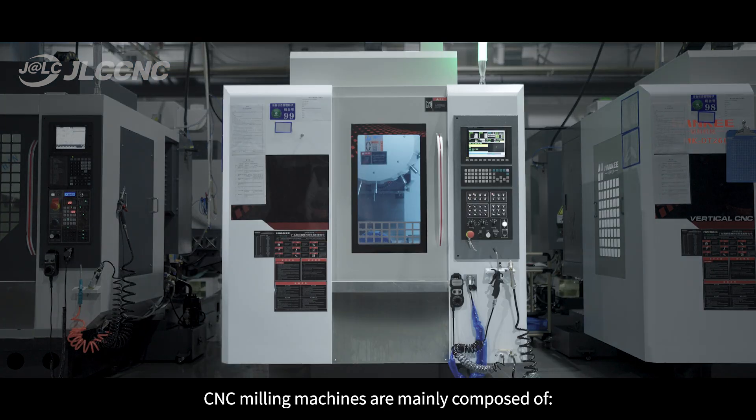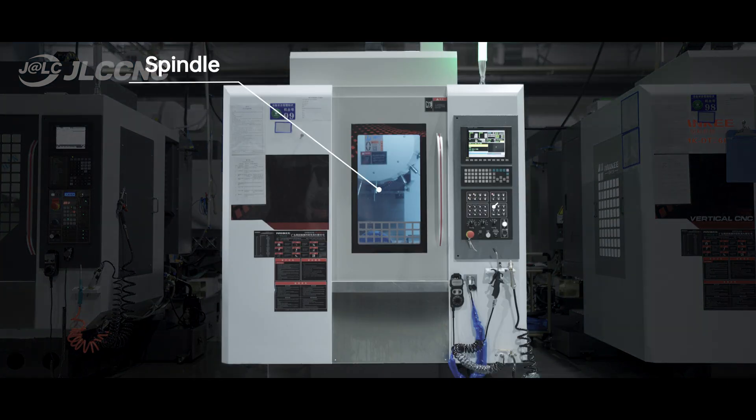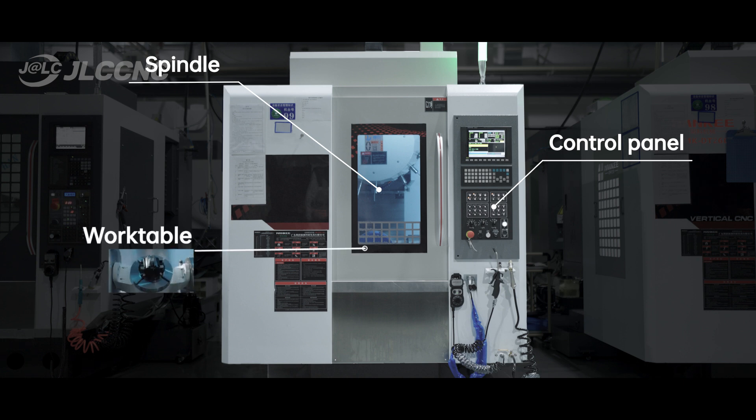CNC milling machines are mainly composed of spindle, control panel, work table and base.